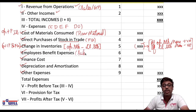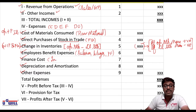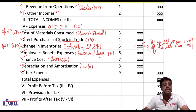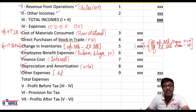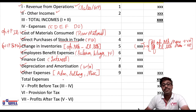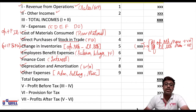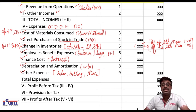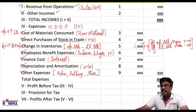Employees benefit expenses include salaries, wages, contribution to PF, etc. Finance costs include interest expense, interest on loans, interest on debentures, etc. Depreciation and amortization includes amortization of written-off items and depreciation. Other expenses are further classified into administrative expenses, selling expenses, and miscellaneous expenses.